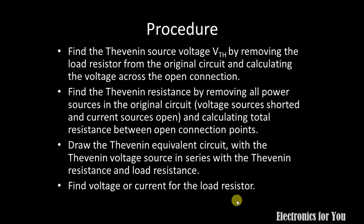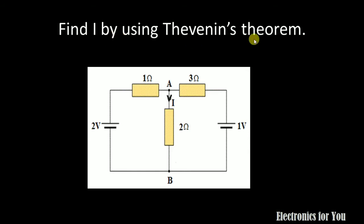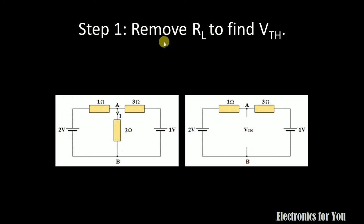Let us see an example of Thevenin's theorem. In this circuit we have to find the current I flowing through the 2 ohm resistance. As per the procedure, first we remove RL and then find Vth. This is our original circuit on the left-hand side. On the right-hand side we have removed RL — the load resistor — which is the 2 ohm resistance.